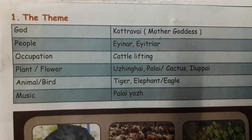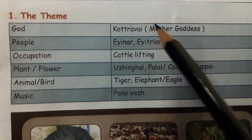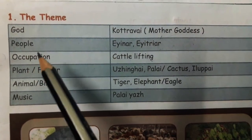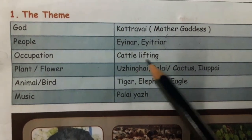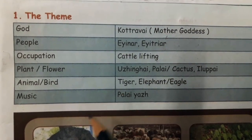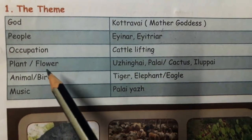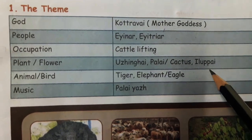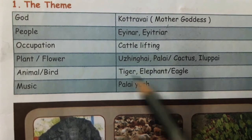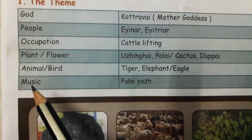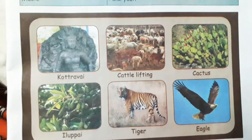Like other lands, Palai also has its own theme. Their god was Kottravai, the mother goddess. Their people were Einar and Aitiar. Their occupation was cattle lifting — they did cattle stealing or lifting. Their plant was Ulingjai Palai, their flower was Cactus and Illupai, their animal was tiger and elephant, their bird was the eagle, and their musical instrument is Palaiyal.